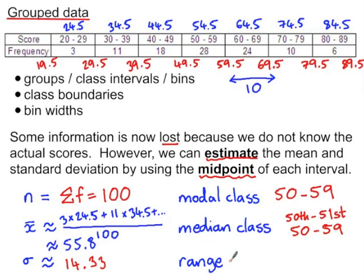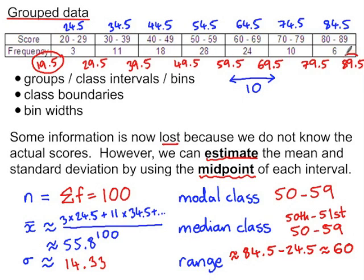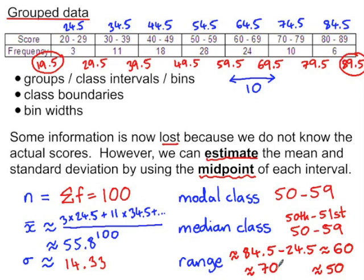Finally, the range can also be estimated using the midpoints of the class intervals, which would give us a range of 60. But we could give a maximum value for the range. The minimum possible value is 19.5 and the maximum possible value is 89.5, giving a range of 70. We could also give a minimum possible range using 29.5 and 79.5, giving a minimum possible range of 50. So our estimate for the range is 60, but we can say with certainty that it lies between 50 and 70.